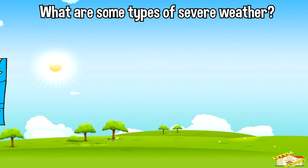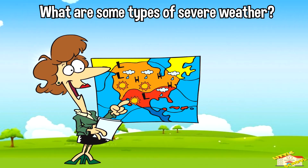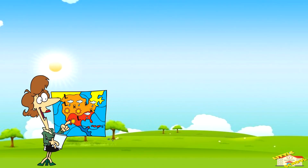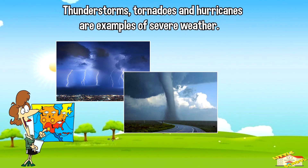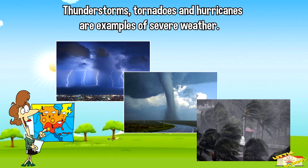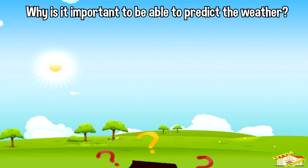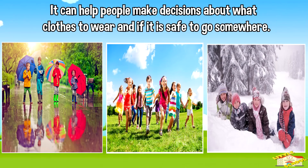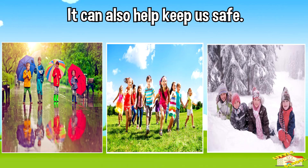What are some types of severe weather? Thunderstorms, tornadoes, and hurricanes are examples of severe weather. Why is it important to be able to predict weather? It can help people make decisions about what clothes to wear, whether it is safe to go somewhere, and it can also help keep us safe.